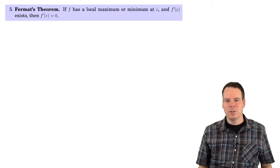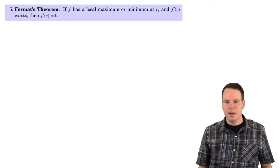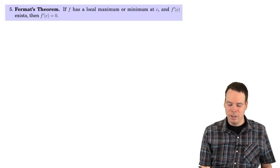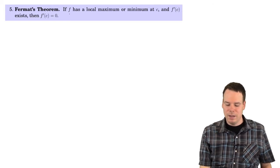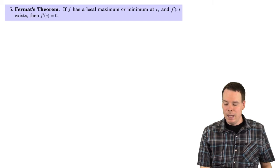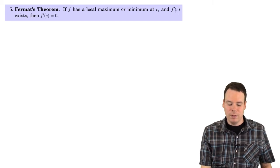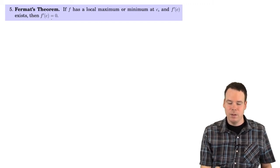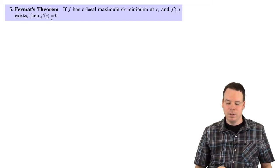The first step in the direction of finding maxima and minima is known as Fermat's theorem. It says that if f has a local max or a local min at c, and we know the derivative exists there, then the derivative has to be 0.